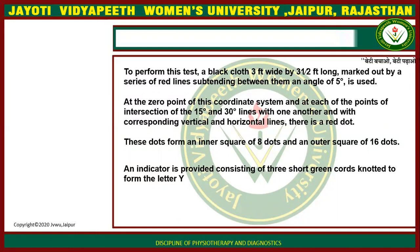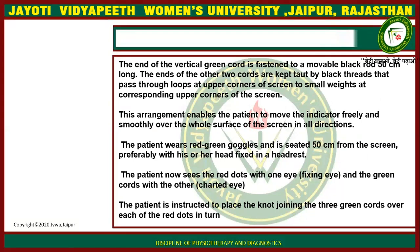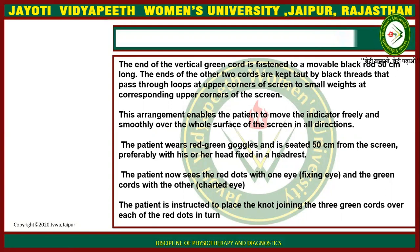These dots form an inner square of 8 dots and an outer square of 16 dots. An indicator is provided consisting of three short green cords knotted to form the letter Y. The end of the vertical green cord is fastened to a movable black rod 15 cm long. The ends of the other two cords are kept taut by black threads passing through loops at the upper corners of the screen to small weights, enabling the patient to move the indicator freely over the whole surface of the screen in all directions.